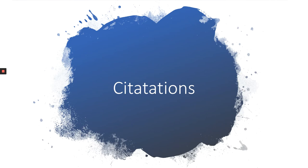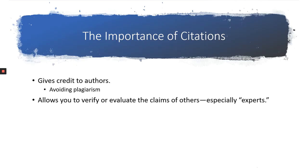When we talk about the context of information, it's important to try to see the information in its original format. That is why citations are so important in scholarship. We've been told since middle school to cite our sources to avoid plagiarism. We need to give credit to authors and sources of information we use in our writing and research.